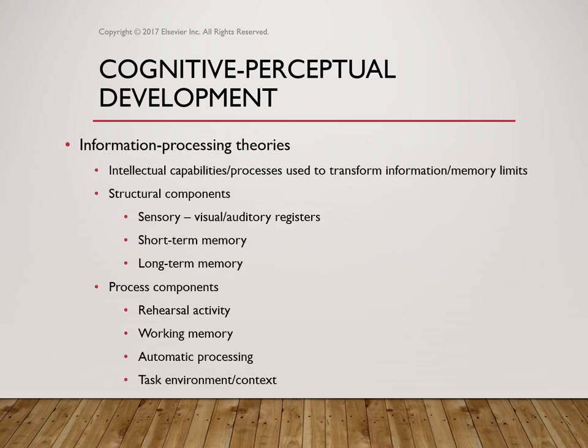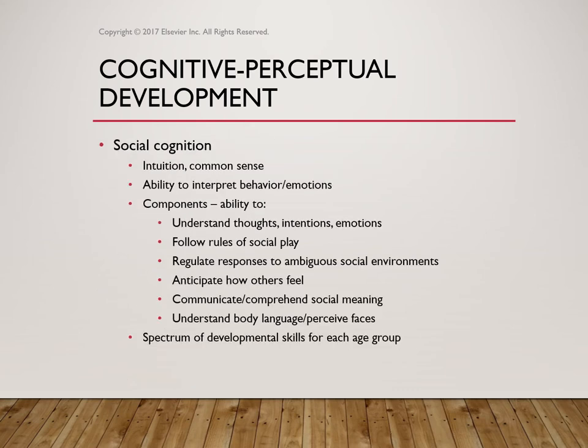We look at information processing theories. The intellectual capabilities include structural components — sensory, visual, auditory registers, cues, short-term memory, long-term memory — and the process components that look at rehearsal activities, working memory, automatic processing, those tasks, structure, and context that have to do with processing different information.